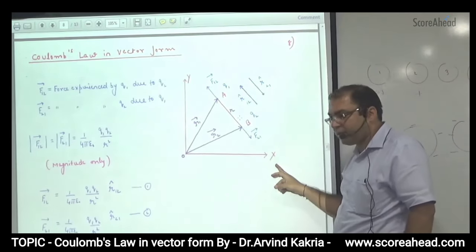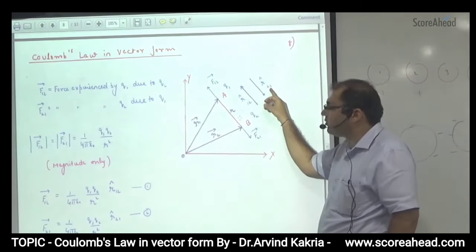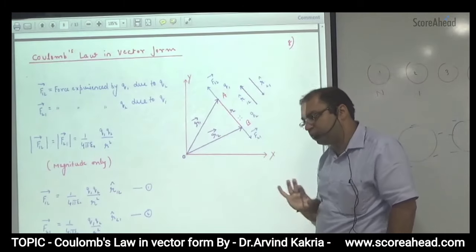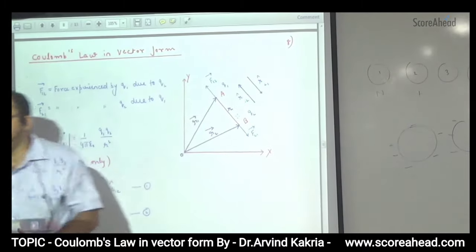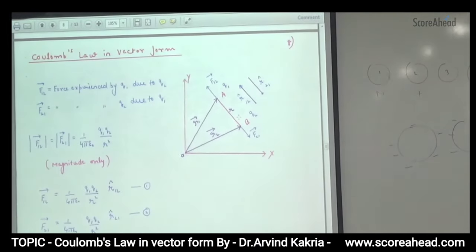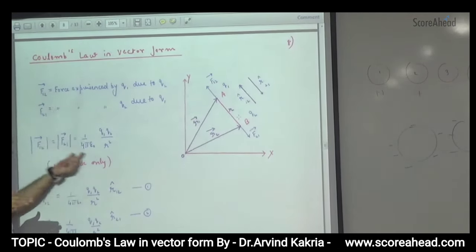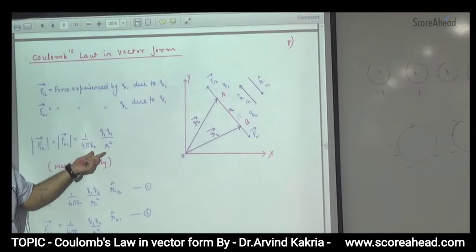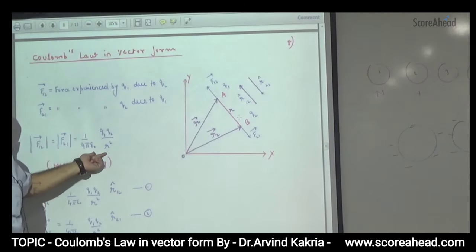Similarly, F21 vector is in the opposite direction, represented by R21 cap. Now, the magnitude of F12 and F21 is not a problem — it is 1 over 4π epsilon-zero, times Q1 Q2 over R squared. That is Coulomb's Law giving us the magnitude. I didn't know the direction, so I wrote only the magnitude part.